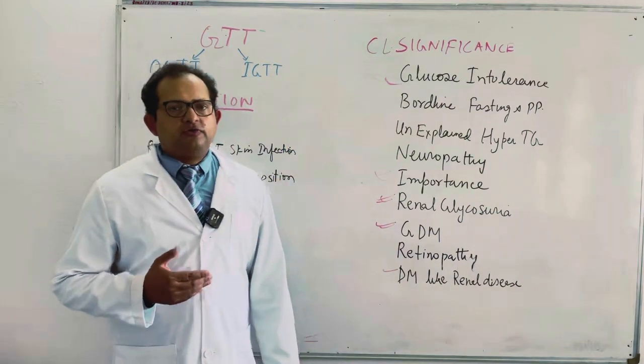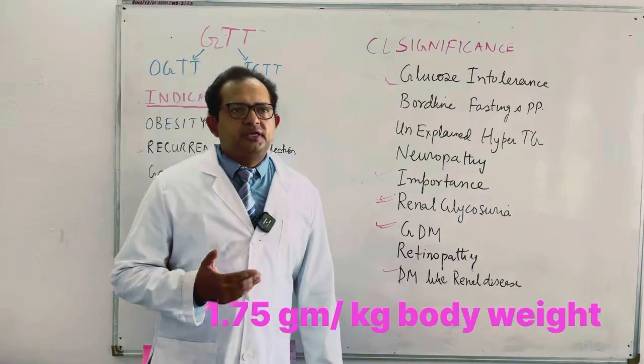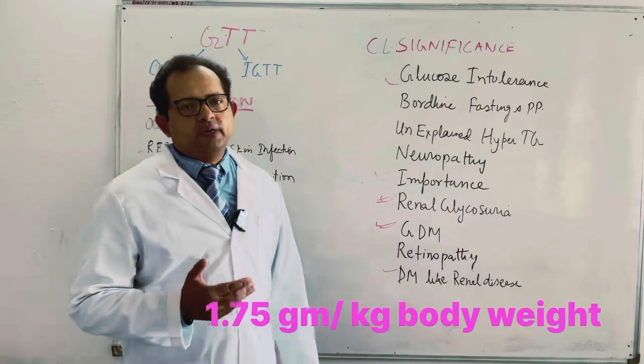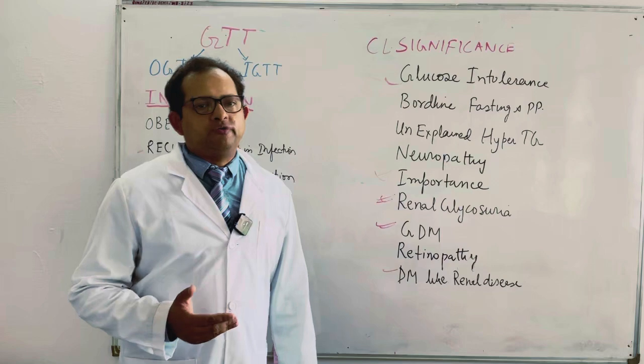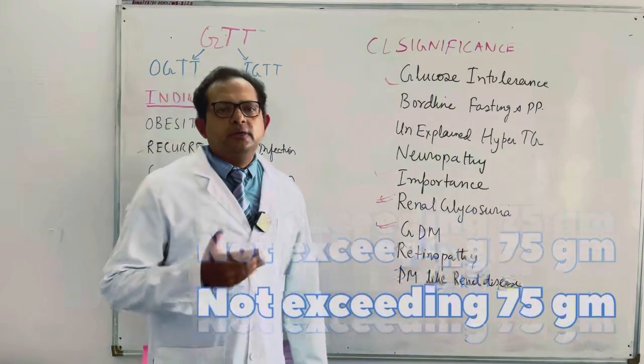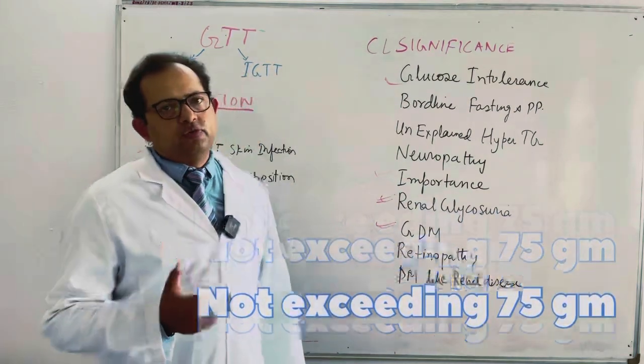In case of children, there is a criteria of 1.75 grams of glucose per kg body weight, but it should not exceed 75 grams of glucose.